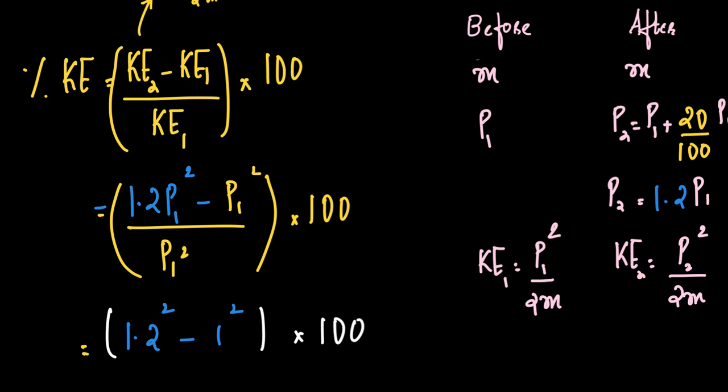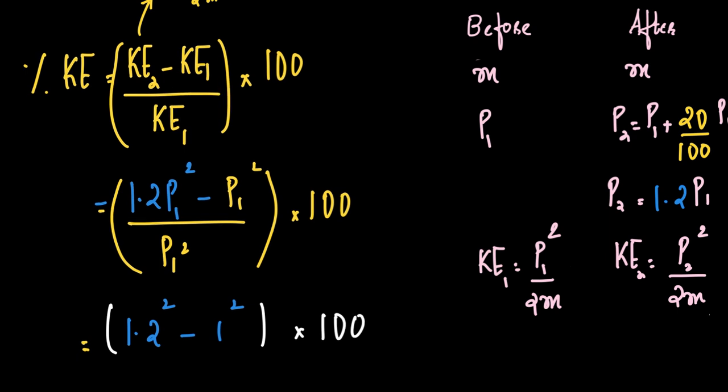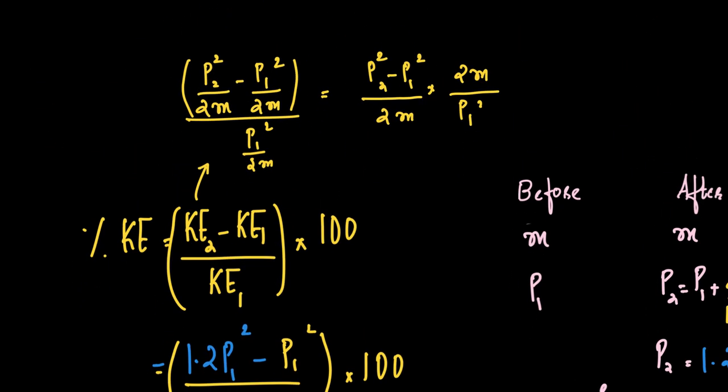What is kinetic energy 2? It is P2 squared by 2m. What is kinetic energy 1? Kinetic energy 1 is P1 squared by 2m.